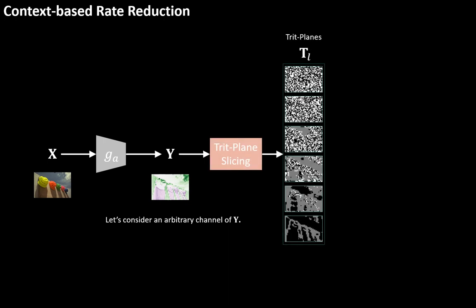Let's consider an arbitrary channel in a latent tensor, Y. It is represented by triplanes through triplane slicing. P is a probability tensor for encoding the triplanes.